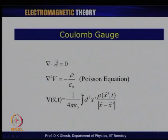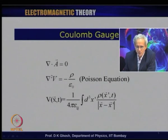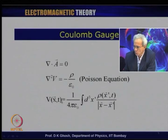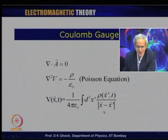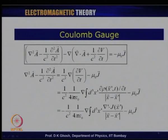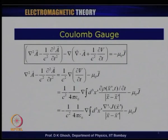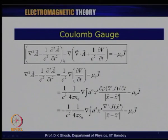Naturally, one asks: is the Coulomb gauge any good? The answer is yes. If del dot A equals 0, referring to the scalar potential equation, the term d/dt of (del dot A) vanishes. This gives del squared V equals minus rho over epsilon_0 — in other words, the scalar potential V satisfies Poisson's equation. This equation has the formal solution V(x,t) equals (1/4 pi epsilon_0) times the integral of d³x prime rho(x prime, t) over |x minus x prime|.